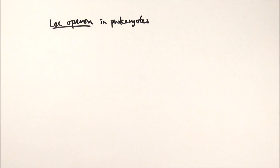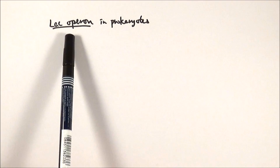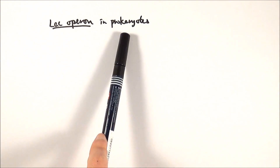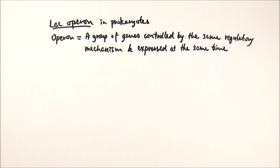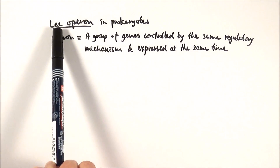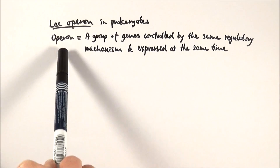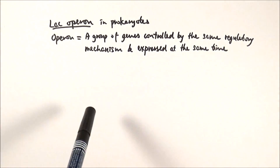We've been talking about the control of gene expression at different levels, and the LAC operon is a specific example that you need to know — it is a transcriptional level control in prokaryotes. An operon is a group of genes controlled by the same regulatory mechanism and expressed at the same time. LAC stands for lactose, because prokaryotes normally use glucose in respiration to produce energy. However, if there is a lack of glucose in the environment, the prokaryotes can activate the LAC operon to break down lactose instead.